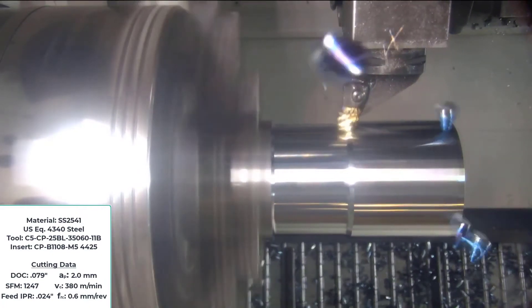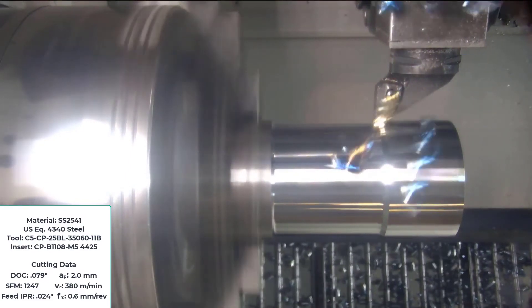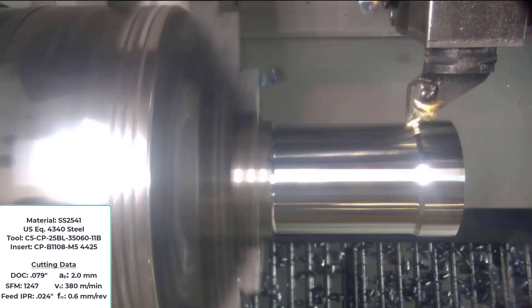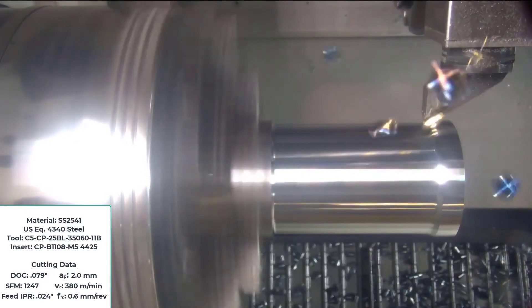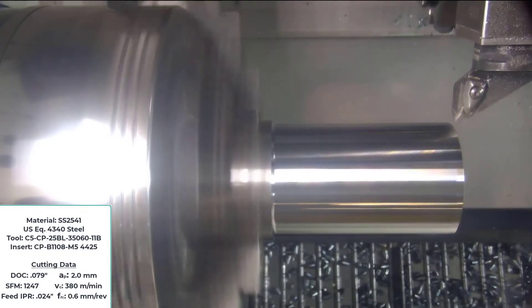In short, prime turning allows a 2 to 3 times increase in feeds and speeds, reducing the cycle time on this part by more than 50% while at the same time extending the tool life of the inserts by as much as 500%.